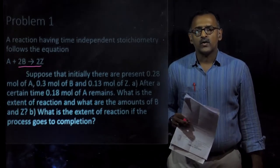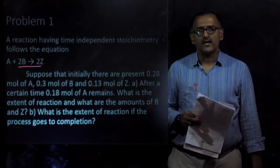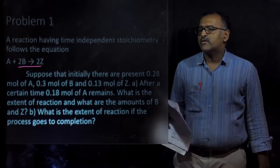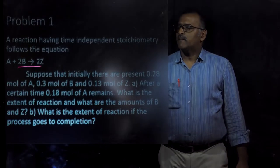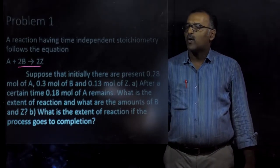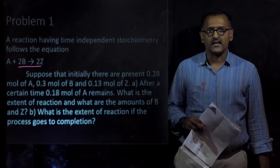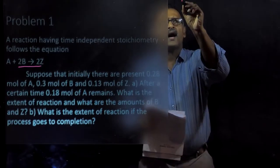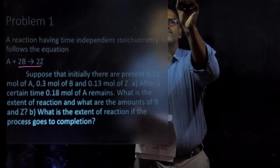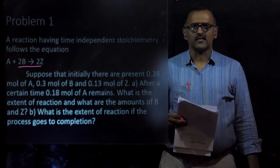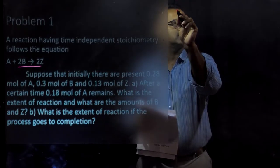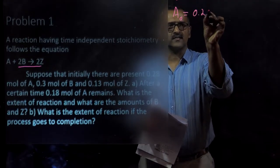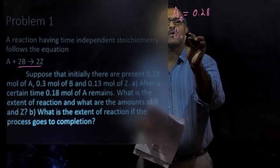This is a simple problem — you have to recall what you have learned about the extent of reaction. For these types of problems, we first look at t = 0. At time equal to zero, we should know what A₀ is. A₀ is 0.28 moles, which is given. The initial amount B₀ is given as well.